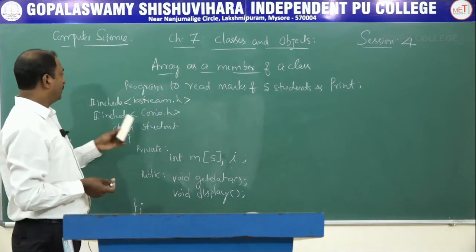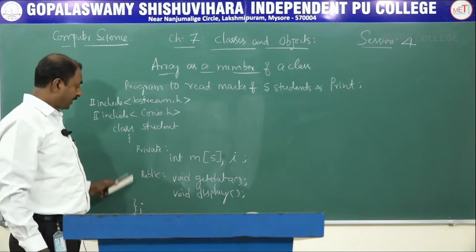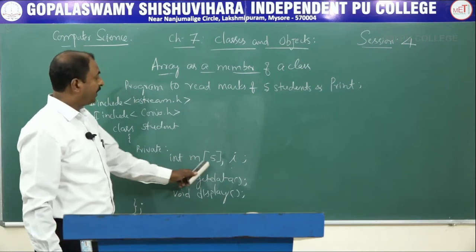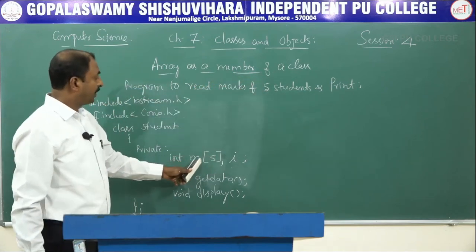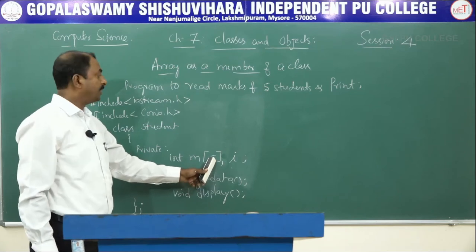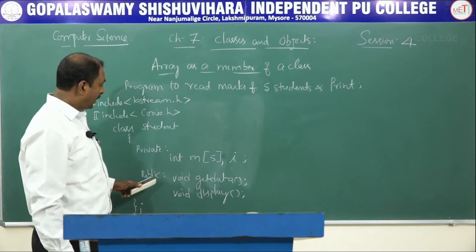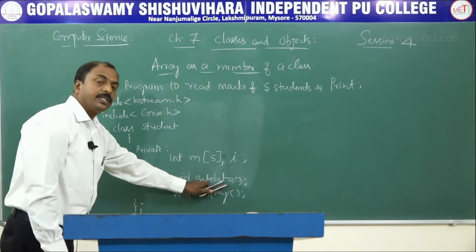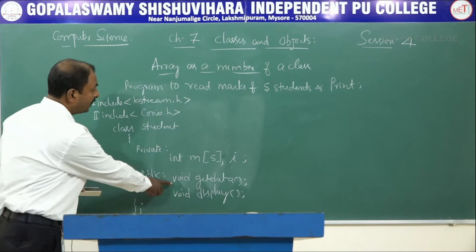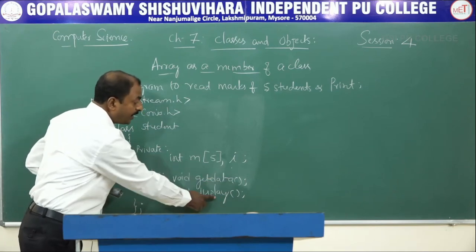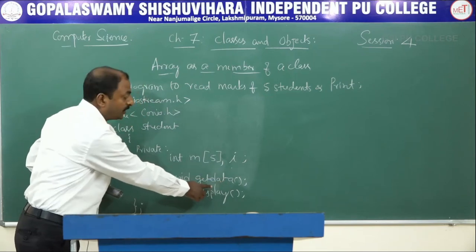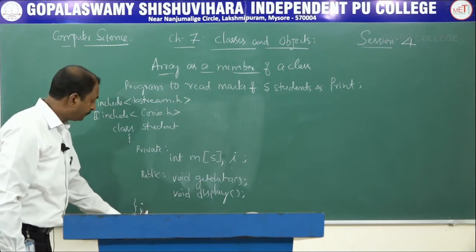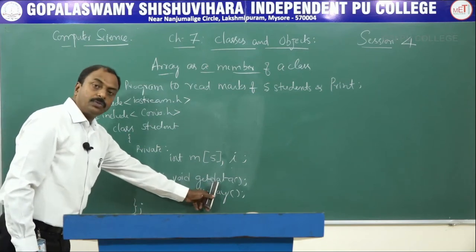As a first step we wrote the header files, and as the next step we defined the class. The class name is 'student'. Under the private specifier, we defined the array m[5] as a member of the class. Under public we declared two functions: getdata and display. Note that this is also an example of function definition outside a class, because we have only declared the functions inside the class.